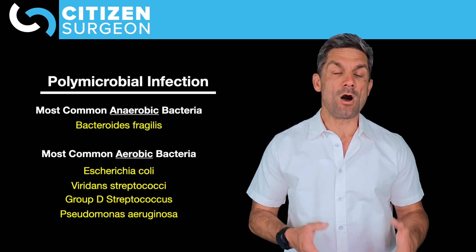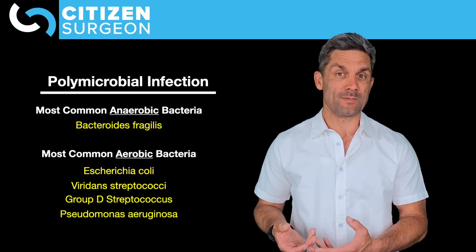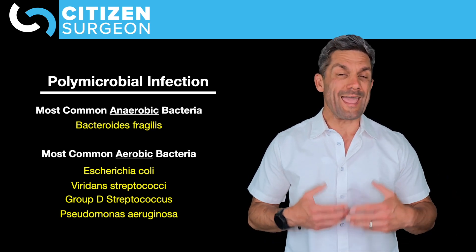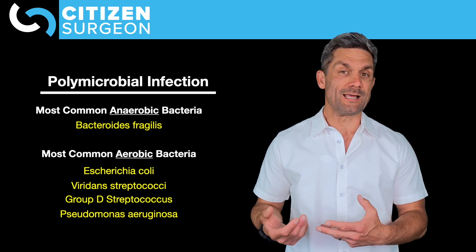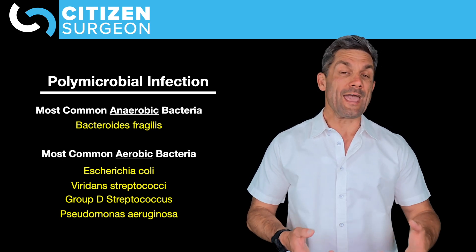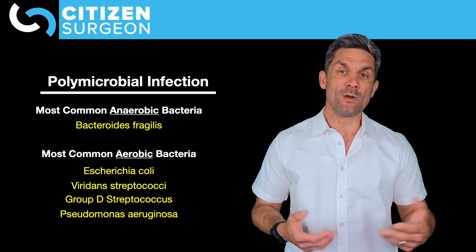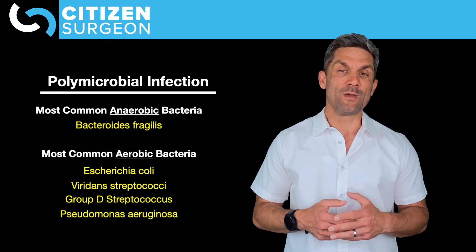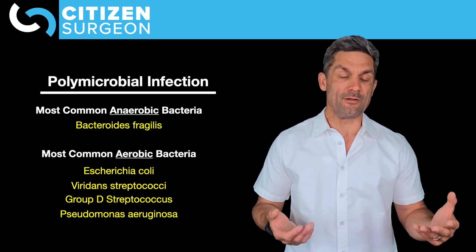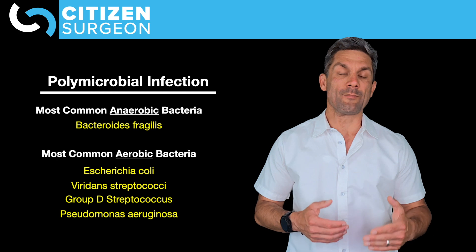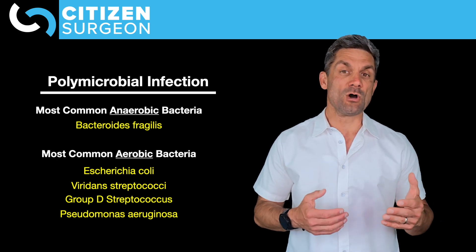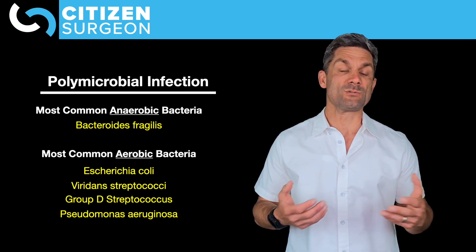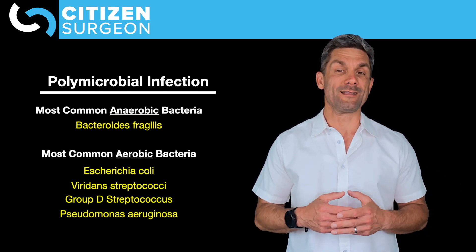Appendicitis is a polymicrobial infection with both anaerobic and aerobic bacteria. The most common anaerobic bacterium is Bacteroides fragilis. For aerobic bacteria, we have a range — Escherichia coli, Strep viridans, Klebsiella pneumoniae, and others. When we get perforated or even non-perforated appendicitis, we have to make sure we're covering this range of bacteria.